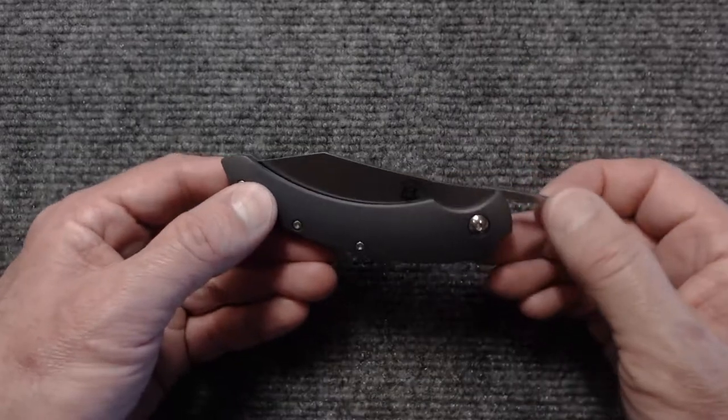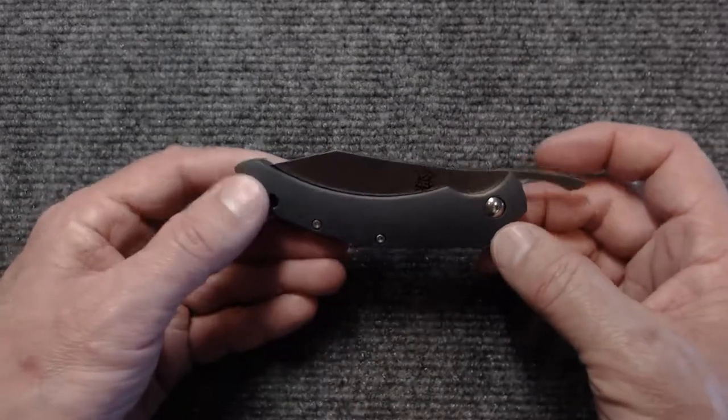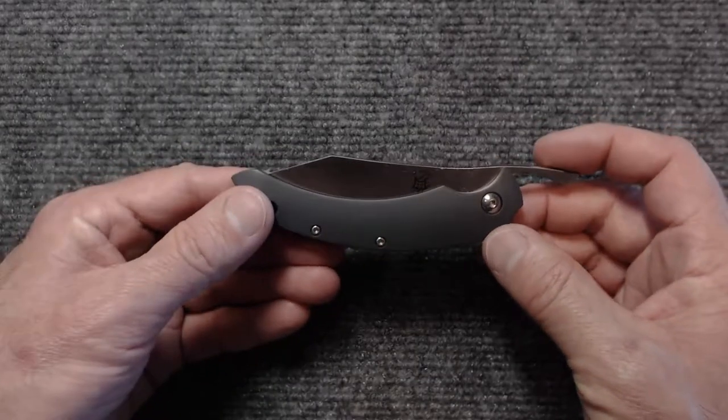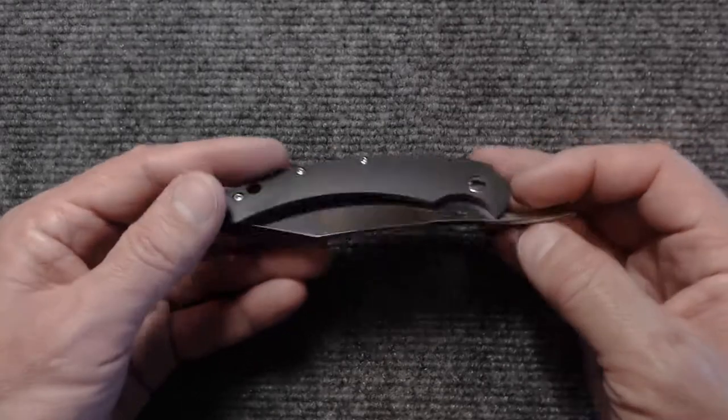I think maybe they should have just stuck with Dragotac or Slim Bastinelli Friction Folder. But anyway, here it is.